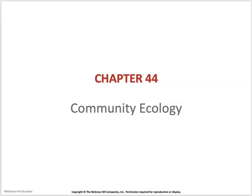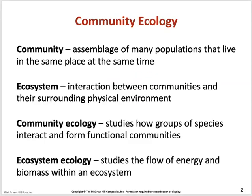Chapter 44: Community Ecology. A community consists of many populations of different species living in the same place at the same time. The difference between a community and an ecosystem is that the ecosystem includes the physical environment as well as the communities that live there. Community ecology studies how different species interact within the community, while ecosystem ecology studies energy flow and biomass between organisms.